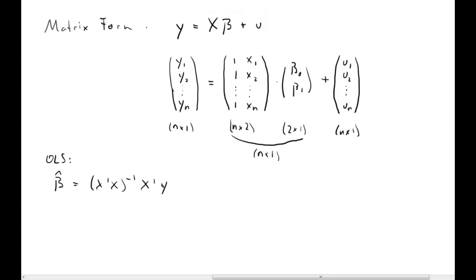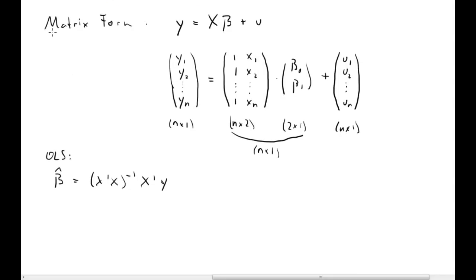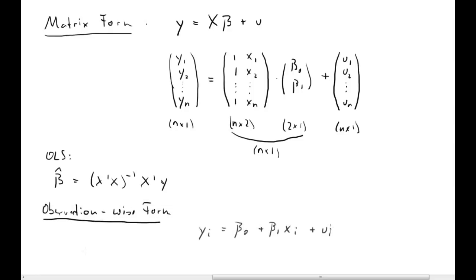That formula you will have to know at any time. Now let's state the same regression model in observation-wise form: y_i equals beta-naught plus beta-1 times x_i plus u_i.